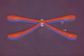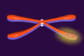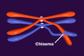During prophase I there is genetic exchange — crossing over — between chromosomes. Chiasmata are visible evidence of crossing over.